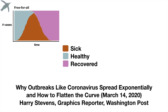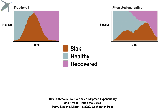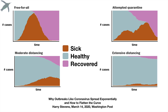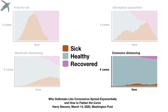I recommend checking out an incredible simulation online — the link is below — by Harry Stevens, a graphics reporter at the Washington Post. He gave me permission to show the simulation, but unfortunately I can only show a small image here. When you go to the site, you can run simulations and see the effect of different types of distancing on the number of cases over time: a free-for-all, attempted quarantine, moderate distancing, and extensive distancing. Every time you run the simulation, your results will be slightly different. The goal is obviously very low numbers of sick people and high numbers of healthy people, giving the healthcare system time to treat those who become sick and time to develop therapeutic agents and hopefully a vaccine.